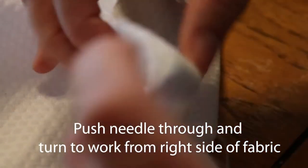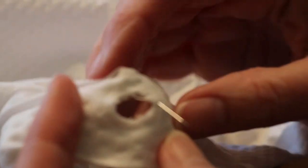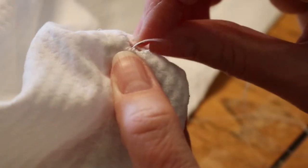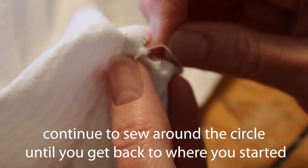Push your needle through and turn to work from the right side of the fabric. Continue to sew around the circle until you get back to where you started.